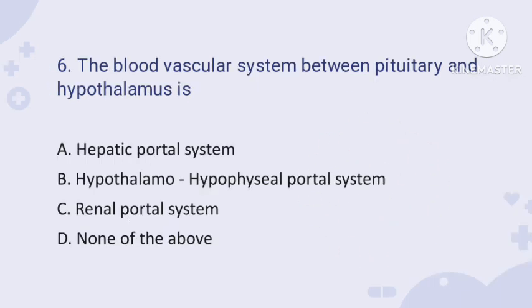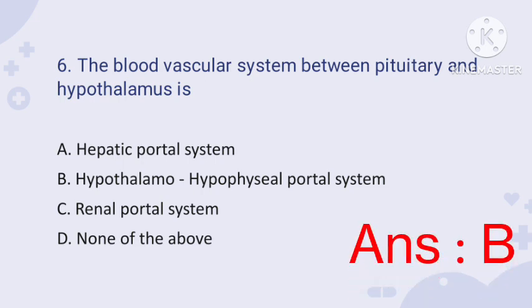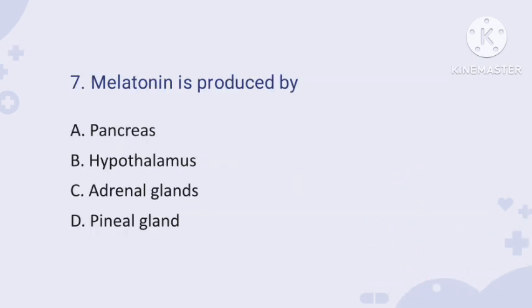Question number six: the blood vascular system between the pituitary and hypothalamus is — the correct answer is the hypothalamo-hypophyseal portal system. It is a special type of blood vascular system located between the hypothalamus and the pituitary gland.